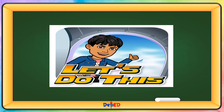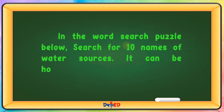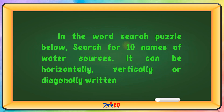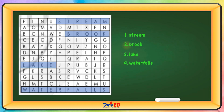Let's do this. In the word search puzzle below, search for 10 names of water sources. It can be horizontally, vertically, or diagonally written. The answers include: Stream, Brook, Lake, Waterfalls, Ocean, Bay, Spring, and River.